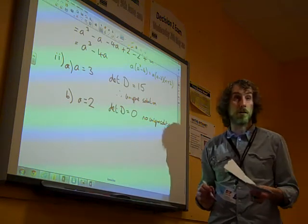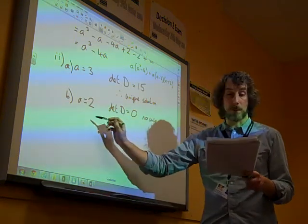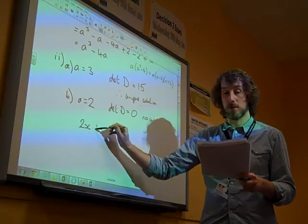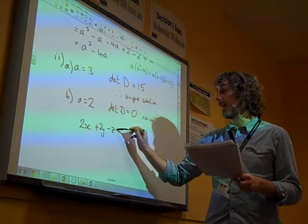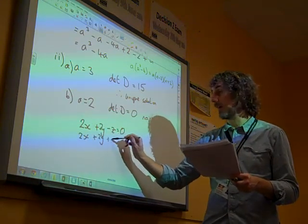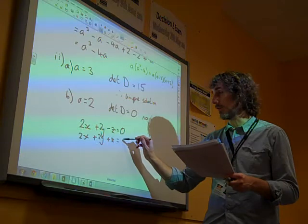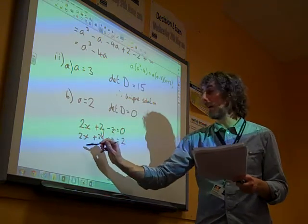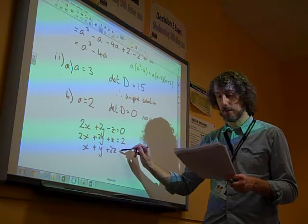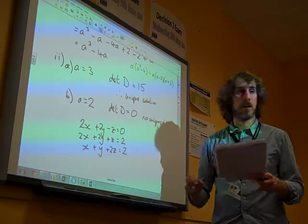So this is the point where we need to dig a little bit deeper into this. We need to look at what the equations look like and decide whether they're consistent or not. We've got 2x plus 2y minus z is 0. We have 2x plus 2y plus z equals 2 because A is 2. We have x plus y plus 2z equals 2 as well.